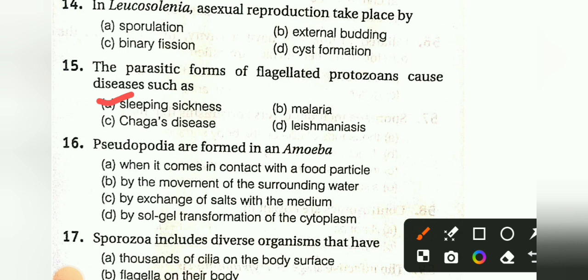Pseudopodia are formed in Amoeba when it comes in contact with a food particle by: movement of surrounding water, exchange of salt with the medium, or salt-gel transformation of the cytoplasm. The answer is D: salt-gel transformation of the cytoplasm.